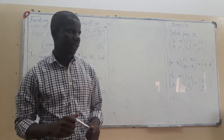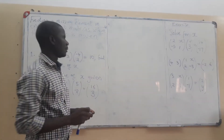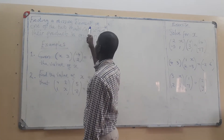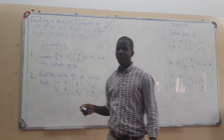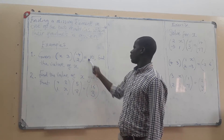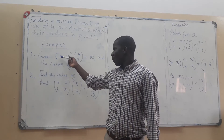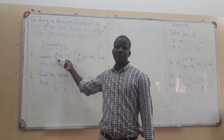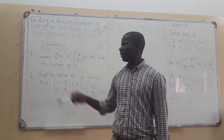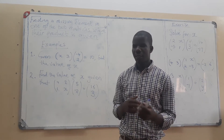Today we are looking at yet another interesting part of matrices, which comes from the multiplication of matrices. What we want to do, as you can see by the heading, is find the missing element in one of two given matrices. We have these two matrices multiplied to get this one, but one of the elements in the matrix is missing.